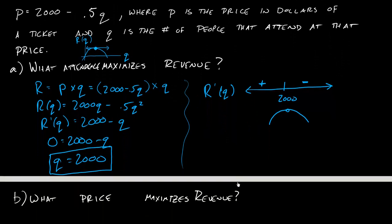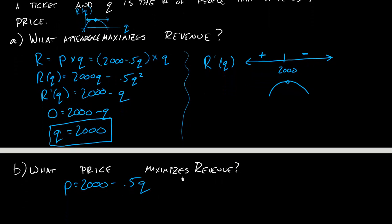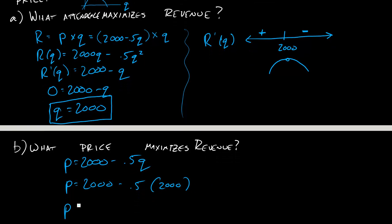The next part of this problem could ask: what price maximizes the revenue? I've already done all the work needed. The problem gave me the relationship between price and quantity up there, and I found the quantity that maximizes revenue. So I can just write price equals 2000 minus 0.5q, and plugging in q equals 2000 gives 2000 minus 0.5 times 2000, which equals $1,000 per ticket. Now this is much higher than in real life, but this is just an example problem with easy numbers to work with.